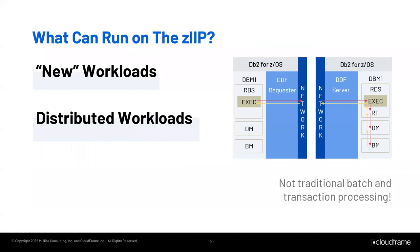An audience member asked: is there a tool to verify if my workloads are eligible for the ZIP? I'm not aware of a tool that will tell you that — you'll have to look through the documentation. However, for whether workloads actually ran on the ZIP, most ZOS performance monitors — things like Omegamon, TMON, MainView, Intellimagic — will tell you what ran on the ZIP and what didn't. To figure out what's eligible, you have to know up front, consult that IBM list, know the type of work you're doing, and move forward.